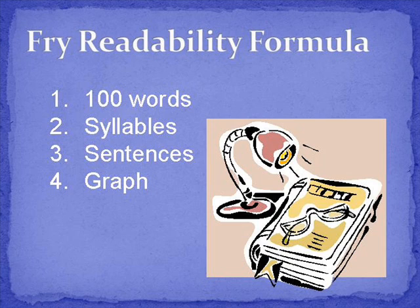Next, count how many syllables there are in those 100 words. Then count how many sentences are in those 100 words, estimating the length of the fraction of the last sentence to the nearest one tenth. Finally, use the Frey graph to determine the reading level score.